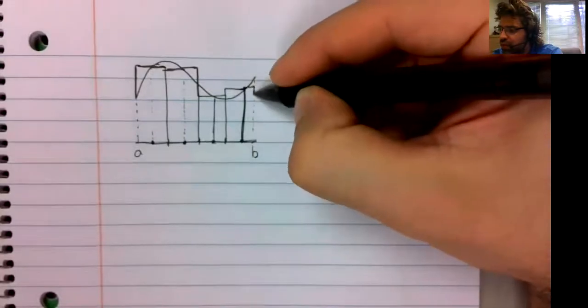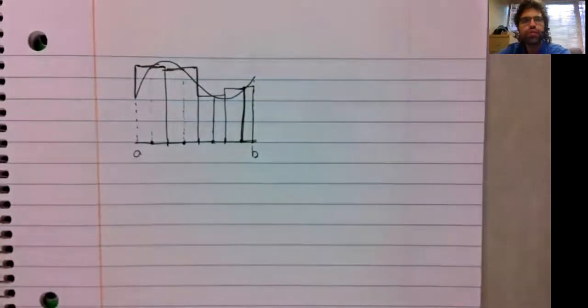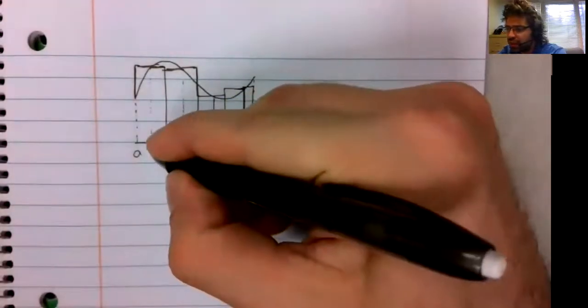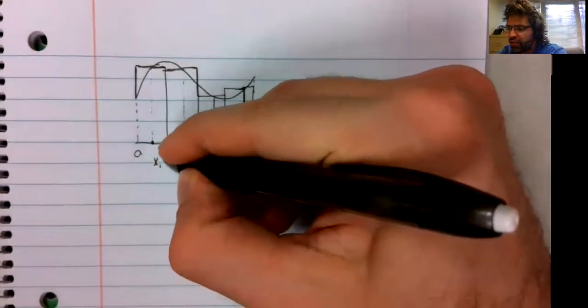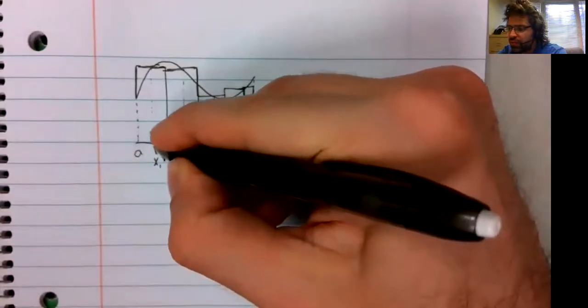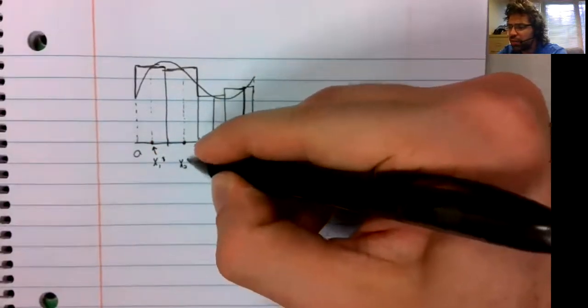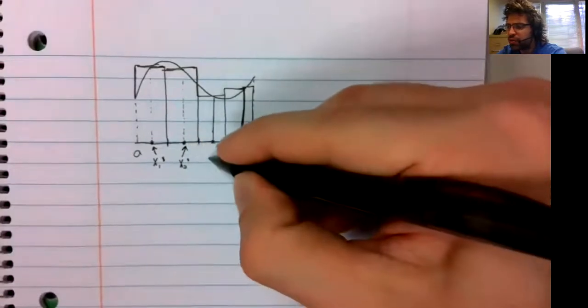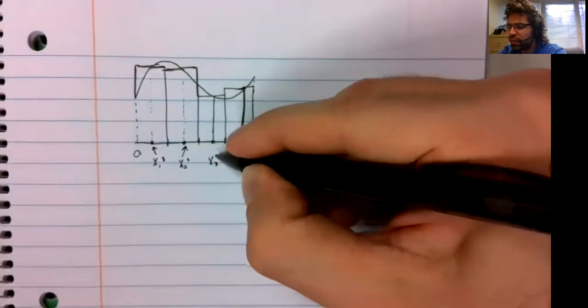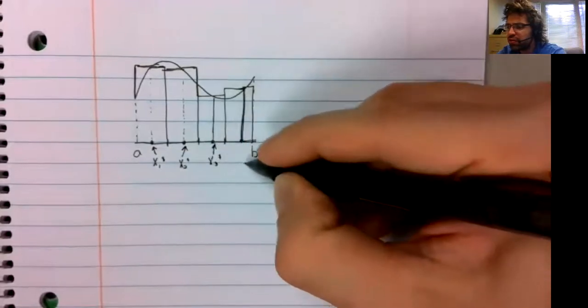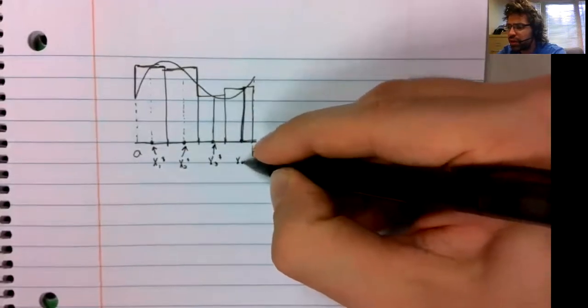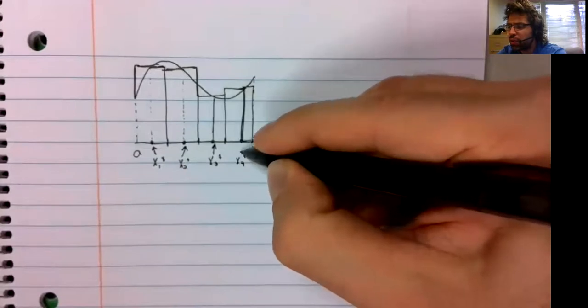And once we have the rectangles, the Riemann sum is the sum of their areas. So if we call this X1 star, X2 star, X3 star, and X4 star,